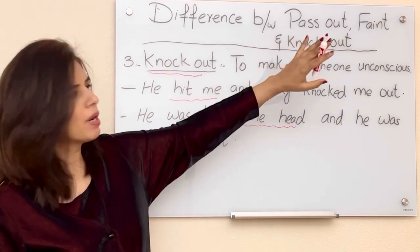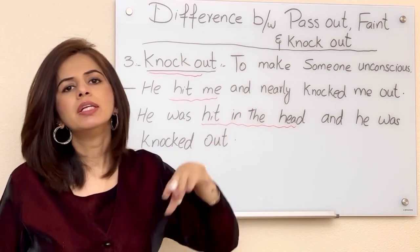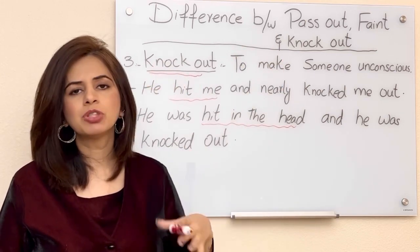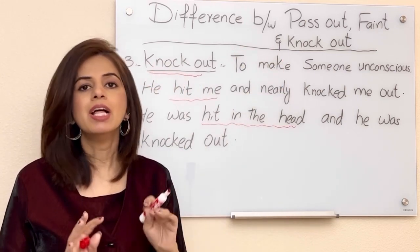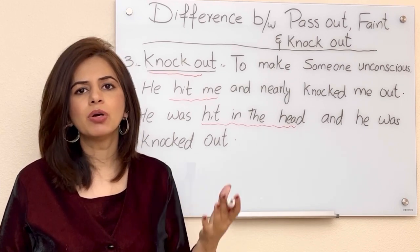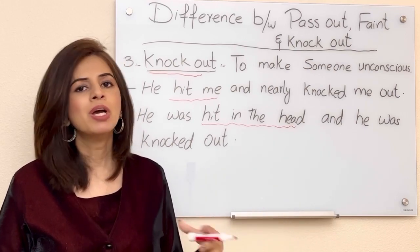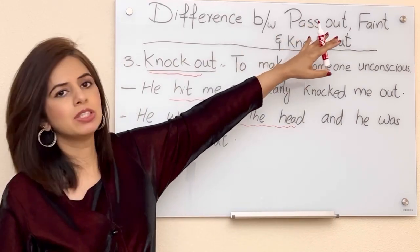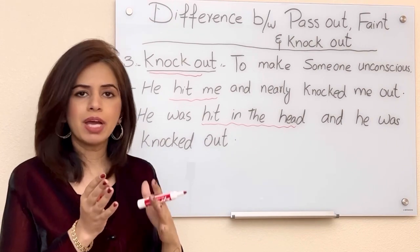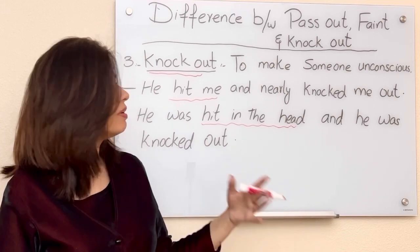So in today's lesson we have seen three phrases. First, faint — used when you are unconscious because of a medical situation. Second, pass out — used when there is either no specific situation or a medical situation, including alcohol or drugs. Third, knock out — used when someone is made unconscious by being hit. The one thing common to all three is unconsciousness. Try to use these phrases in your daily routine and conversation, and you will understand the main difference between them.